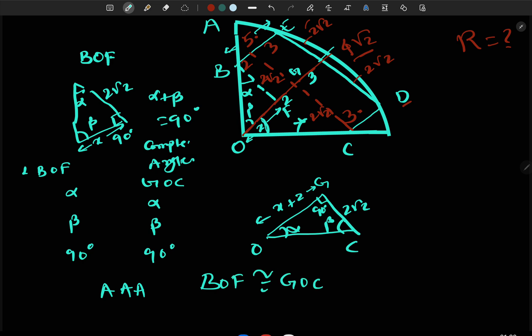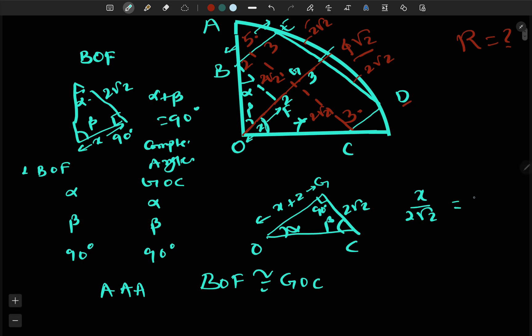Now when such similarity happens, the ratio of sides has to be equal. So just see, the side in front of alpha is x for my BOF triangle, and similarly in GOC the side in front of alpha is 2√2. Similarly, side in front of beta is 2√2 for BOF, and for triangle GOC in front of beta we have x plus 2.